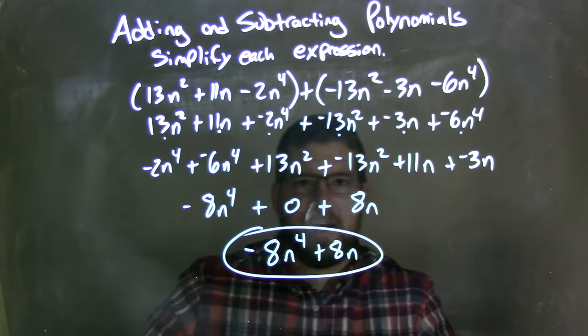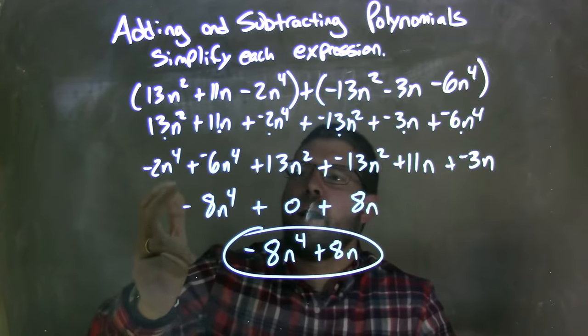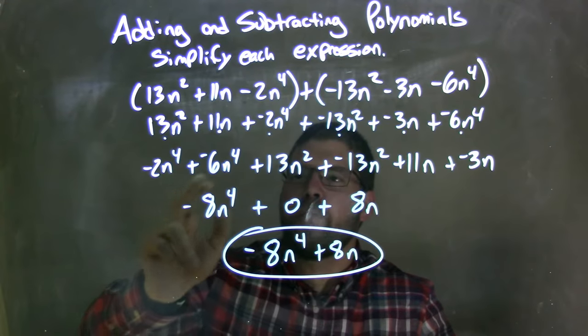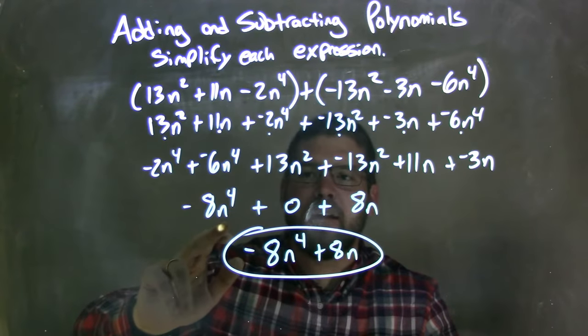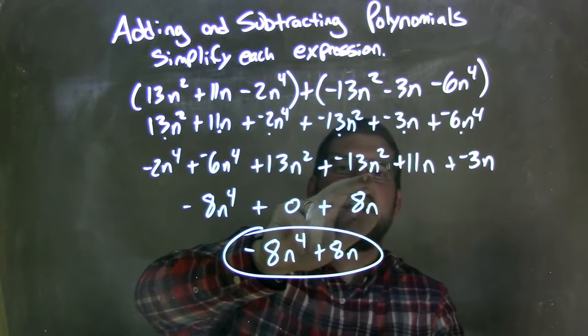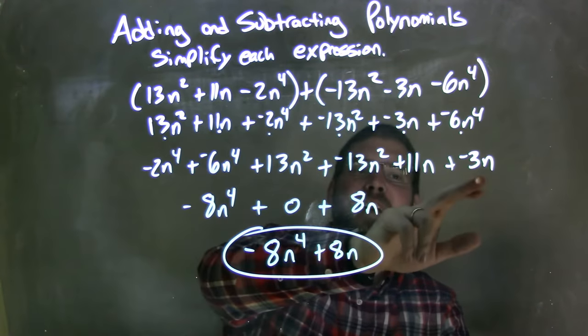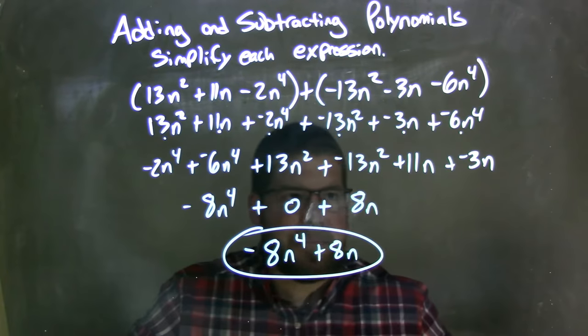Then I combined them, simplified. These two came together. And negative 2n to the fourth plus a negative 6n to the fourth is negative 8n to the fourth. 13n squared plus a negative 13n squared is zero. 11n plus a negative 3n was a positive 8n.